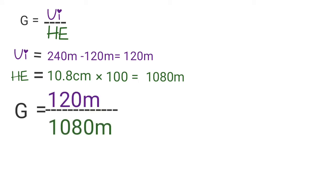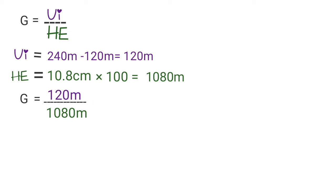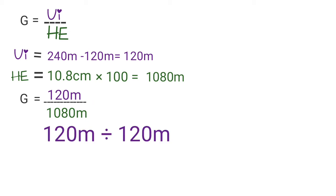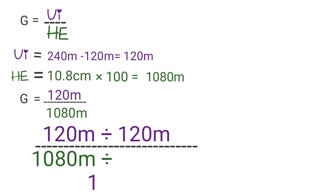Now put your answer according to the formula: VI over HE equals 120 meters over 1080 meters. Divide both sides by the VI (120): 120 divided by 120 equals 1, and 1080 divided by 120 equals 9. The answer in ratio form is 1:9. This means for every 1 meter you rise vertically, you cover 9 meters horizontally — showing that the area from 7 to 8 is steep.